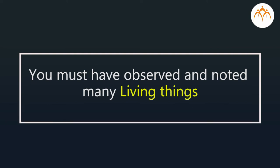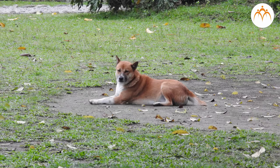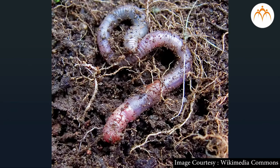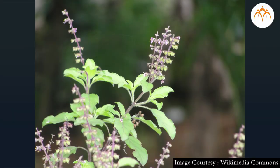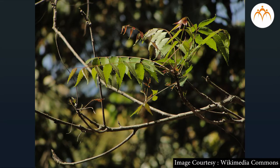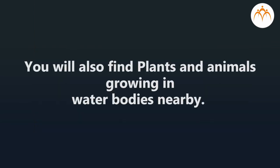I am sure you must have observed and noted many living things. For example: dogs, cats, lizards, birds, insects, earthworms, and so on — a long list of animals. Among plants: grass, common herbs like tulsi and rose, trees like coconut, mango, neem, etc. You will also find plants and animals growing in water bodies nearby.